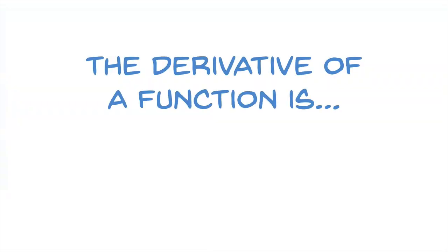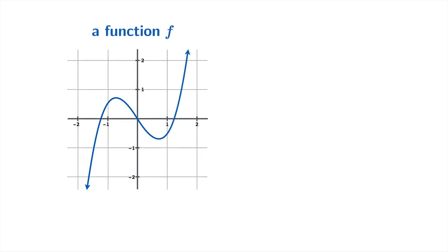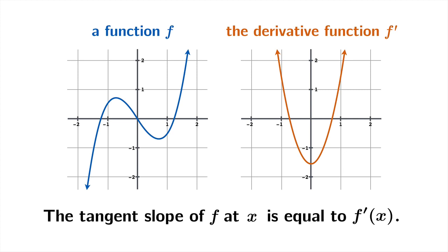So recall that the derivative of a function is its tangent slope function. If you had the graph of a function f and the graph of its derivative function f prime, then the tangent slope of f at x is equal to the value of the derivative f prime at x. In other words, if f prime of x were equal to negative three quarters, then at that same argument x in the original function you would know that the tangent slope was negative three quarters.